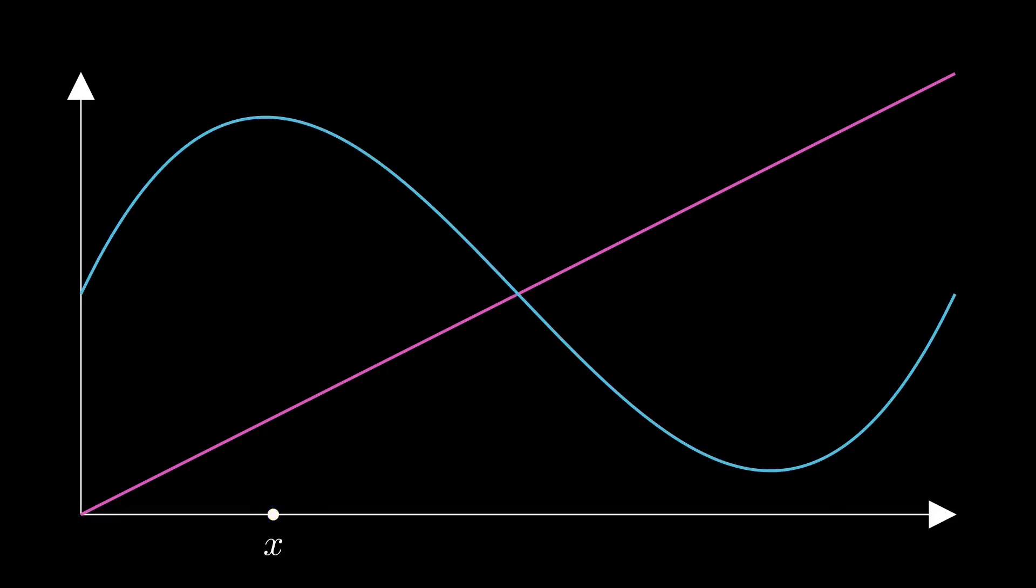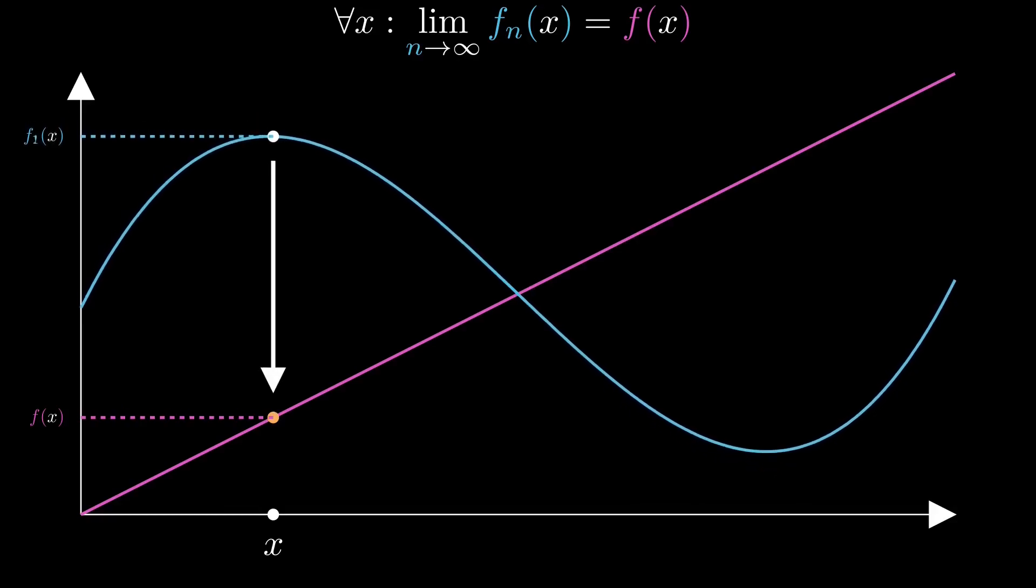Take any point x in the input domain. Then this point here on the graph has the height fn of x where right now n equals 0. And this point here has the height f of x. We say that the functions fn converge to the function f if fn of x converges to f of x. So basically if these two points here get infinitely close over time, like so.